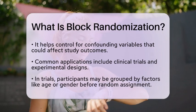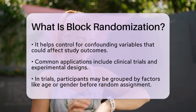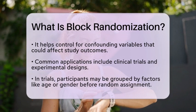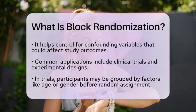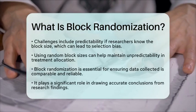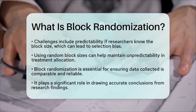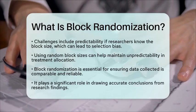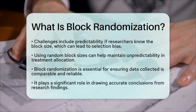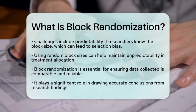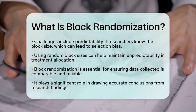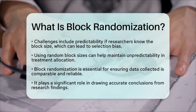However, block randomization is not without its challenges. If researchers know the block size, it can lead to predictability. This predictability might introduce selection bias, where researchers can anticipate which treatment the next participant will receive. To avoid this, using random block sizes can help keep the allocation unpredictable.